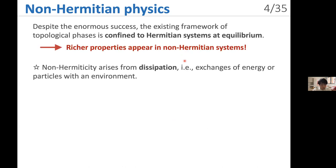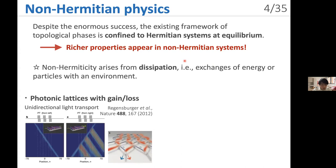Despite this normal success, the existing framework of topological phases is confined to Hermitian systems at equilibrium. However, richer properties appear in non-Hermitian systems, where non-Hermiticity arises from dissipation or exchanges of energy or particles with an environment. Non-Hermiticity changes conventional physics and leads to new phenomena. For example, in a photonic lattice which balances gain and loss, unidirectional light transport was realized.